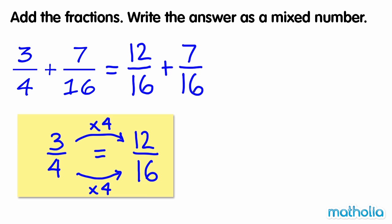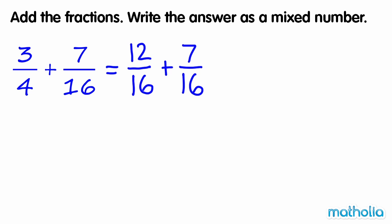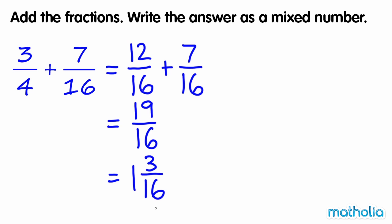The denominators are now the same, so we add the numerators. Twelve plus seven equals nineteen, so twelve-sixteenths plus seven-sixteenths equals nineteen-sixteenths. We can rewrite this as the mixed number one and three-sixteenths. So three-quarters plus seven-sixteenths equals one and three-sixteenths.